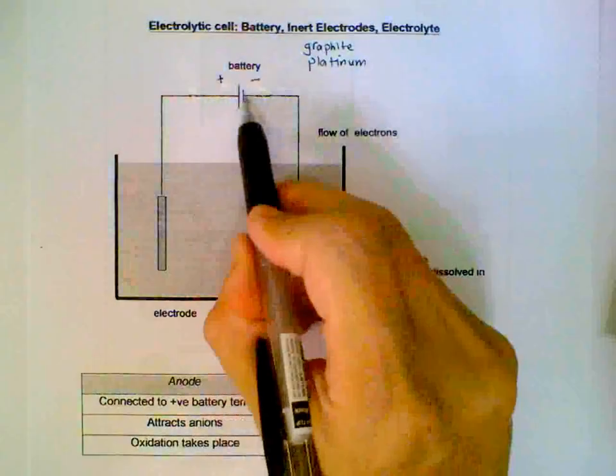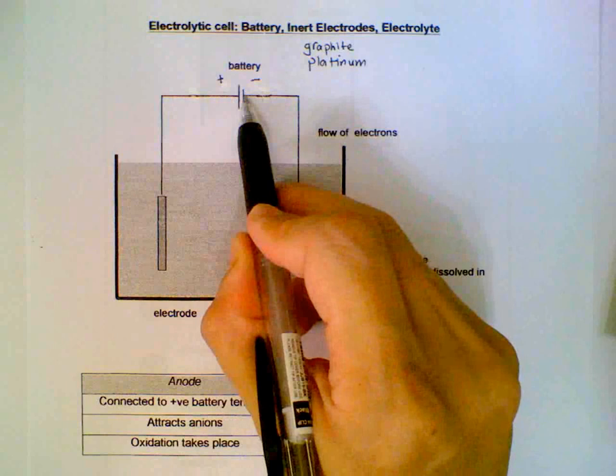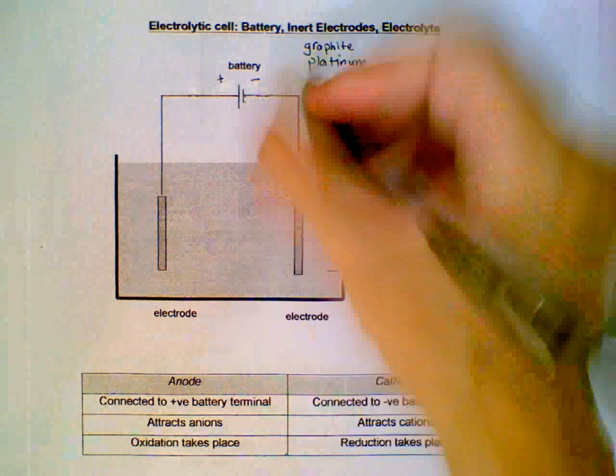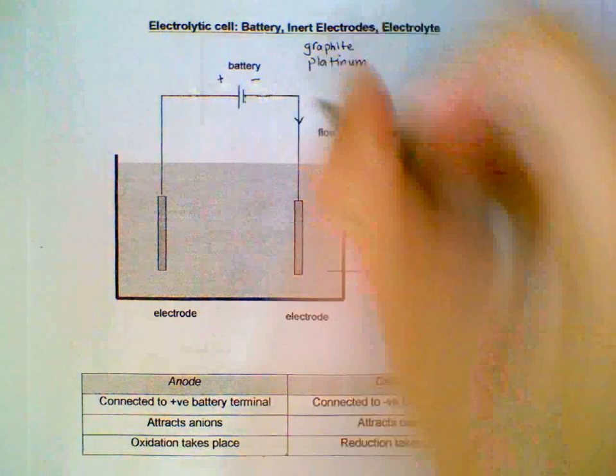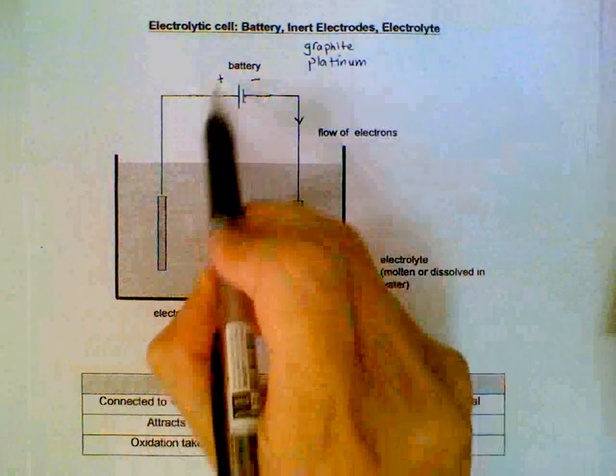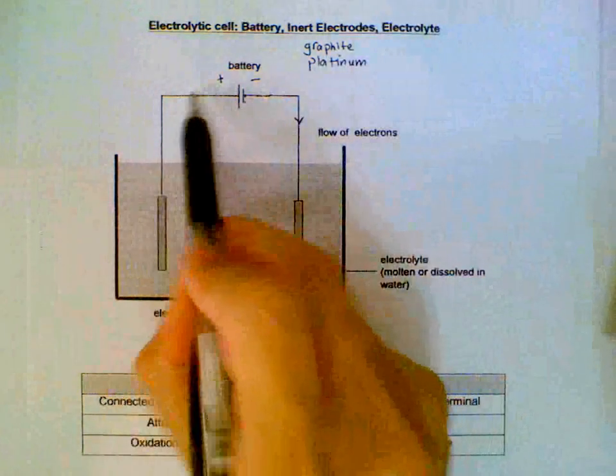The negative terminal for the battery provides the source of electrons. So electrons come out through this end into the wire and to the electrode. For the positive end, this is where the electrons enter the battery.